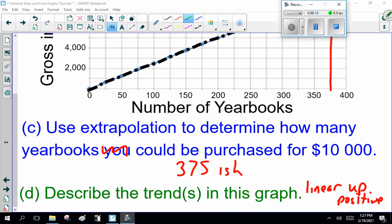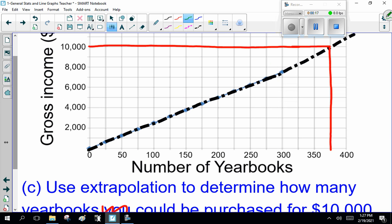Let's talk about trends in this graph. It's linear. It's going up. It's positive. Buy more yearbooks, you get more money.